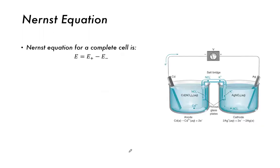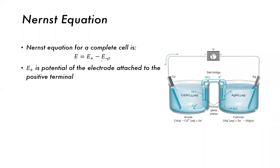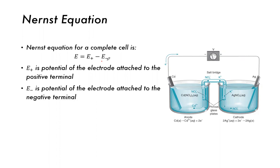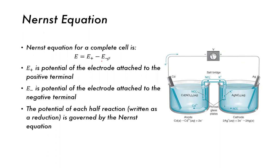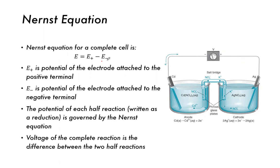The Nernst equation for a complete cell: E_plus is the potential of the electrode attached to the positive terminal, E_minus is the potential attached to the negative terminal. The potential of each half reaction is written as a reduction and governed by the Nernst equation derived previously. The voltage of the complete reaction is the difference between the two half reactions — using a minus sign to describe the whole cell.